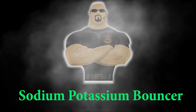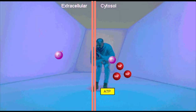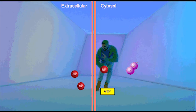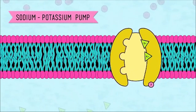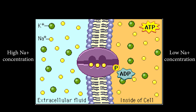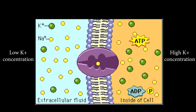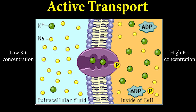The sodium-potassium bouncer steps in: 'This party's getting a bit too full. Sodium, I need three of you to head out. Potassium, two of you can head in.' The sodium-potassium pump stabilizes the membrane potential party by transporting three sodium out for every two potassium brought in. Since the pump is moving sodium and potassium against their concentration gradient — from low concentration to high concentration — this is an example of active transport.